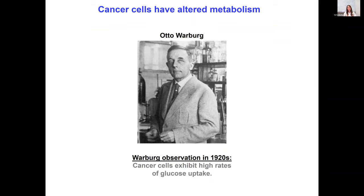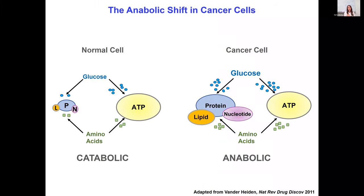It has been long recognized that cancer cells have altered metabolism. This is since the early days of Otto Warburg about a century ago, who made the interesting discovery that cancer cells have a higher rate of glycolysis and also increase lactate production. We now know this is due to fundamental differences between the metabolism of normal cells and cancer cells. Normal differentiated cells generally use catabolic processes to maintain their biomass, while cancer cells shift towards anabolic processes to generate more biomass such as lipids, proteins and nucleotides to sustain cell division.